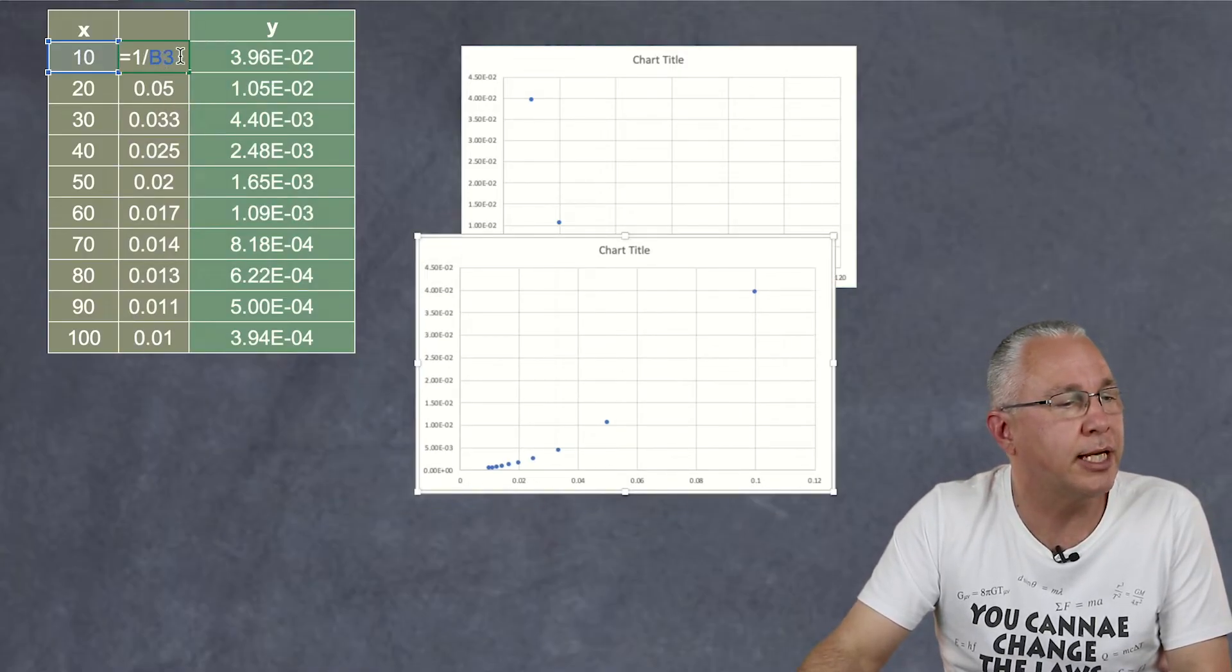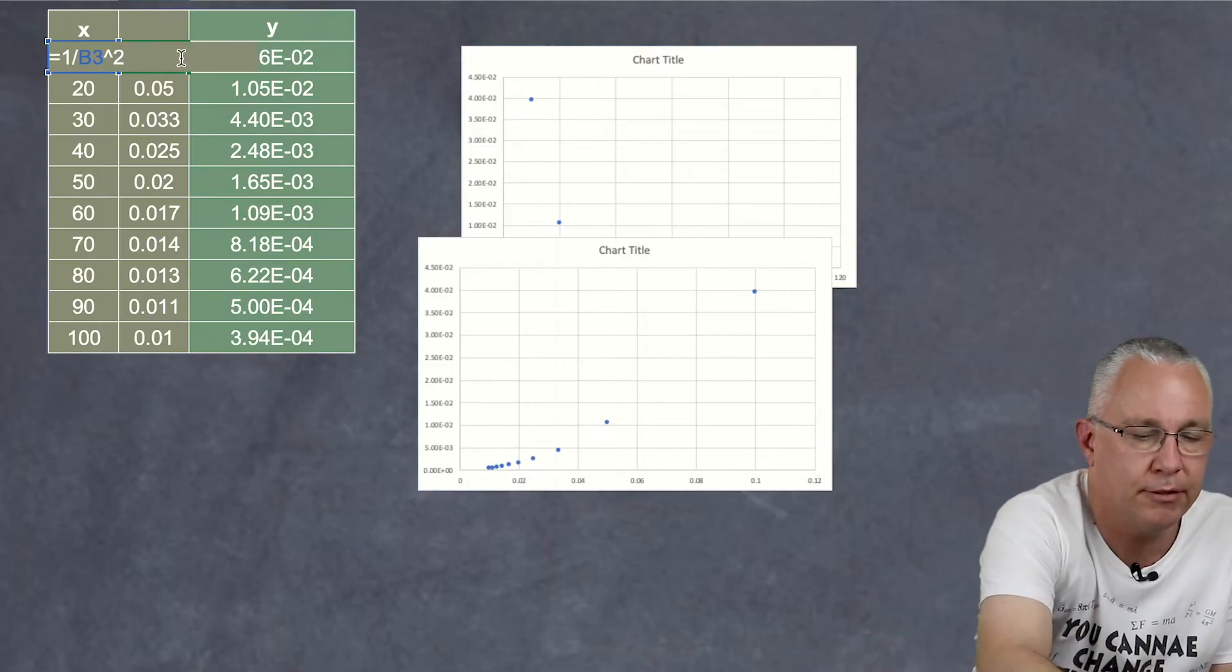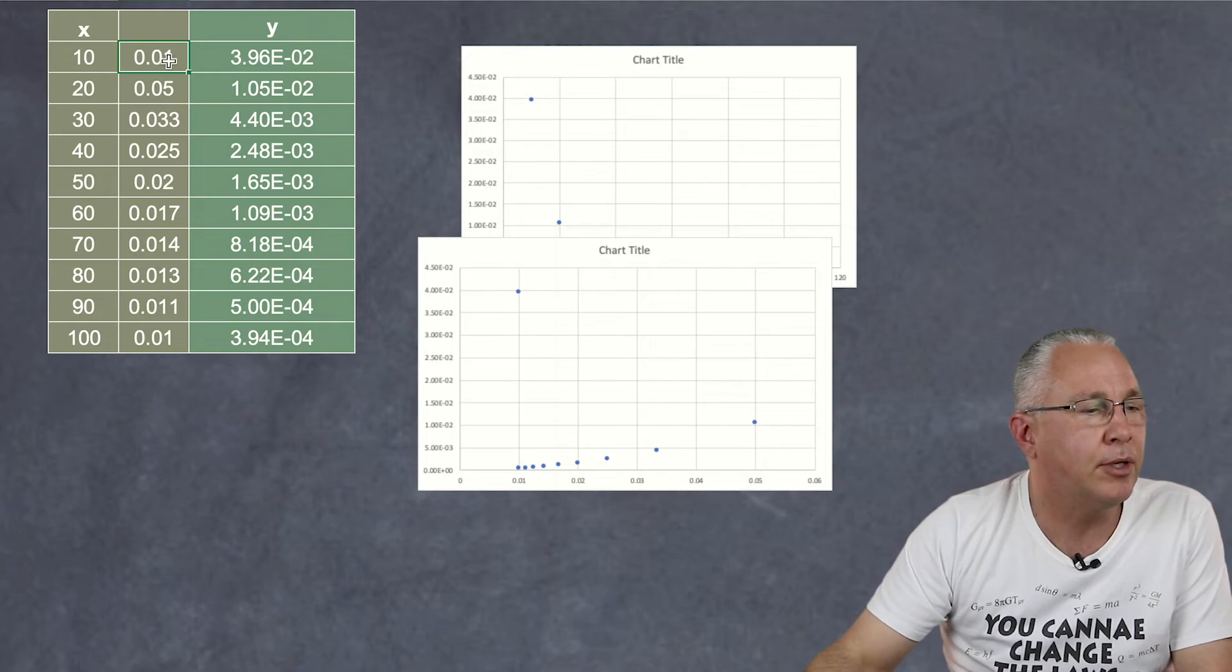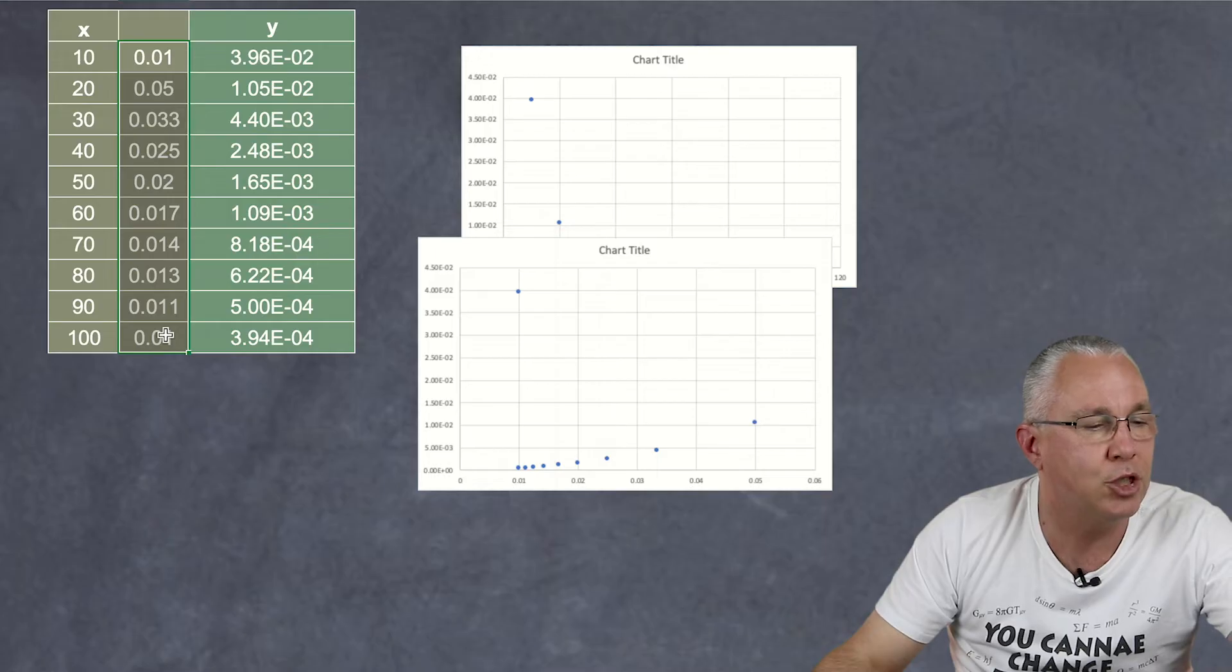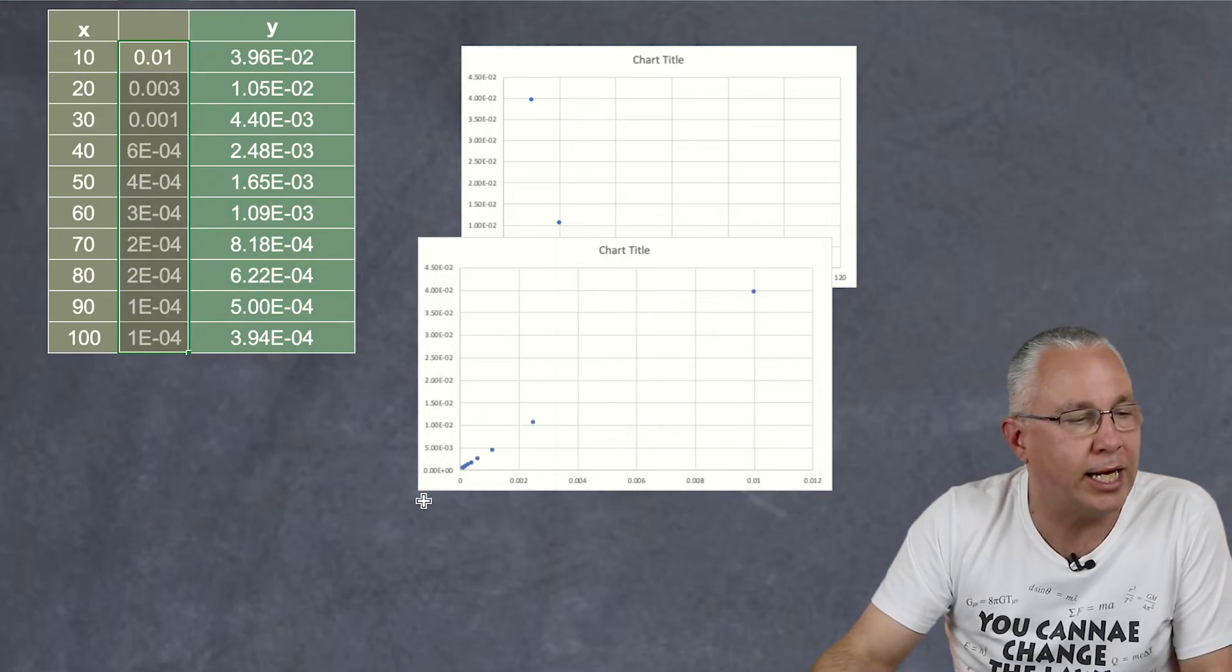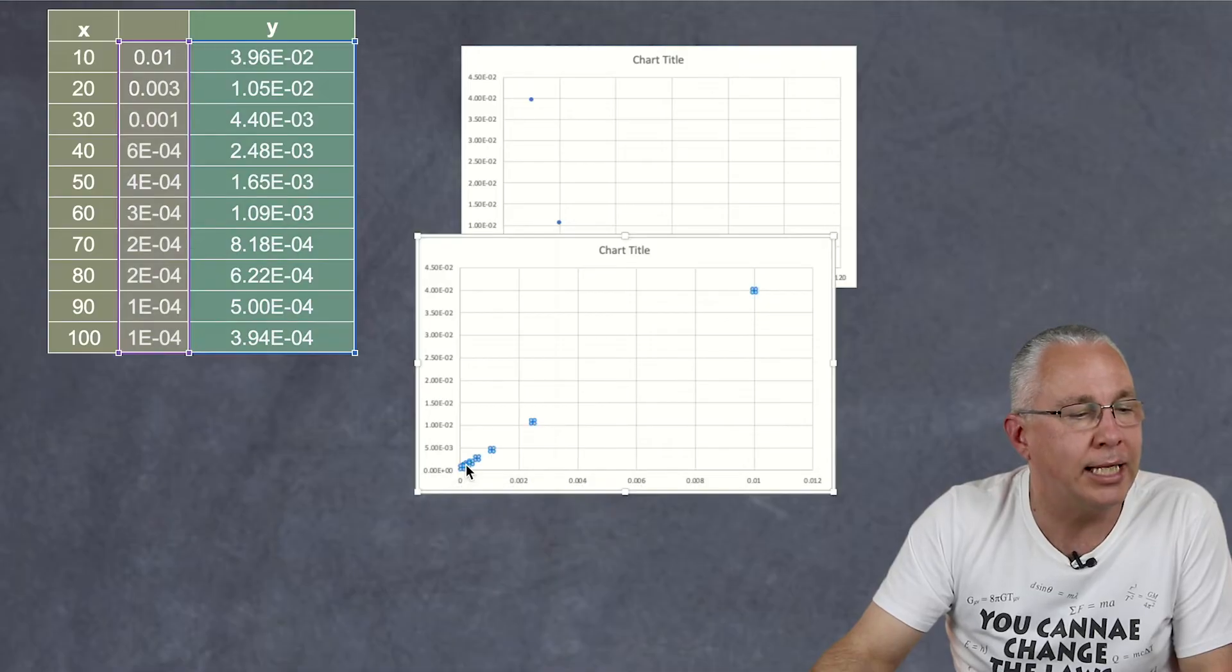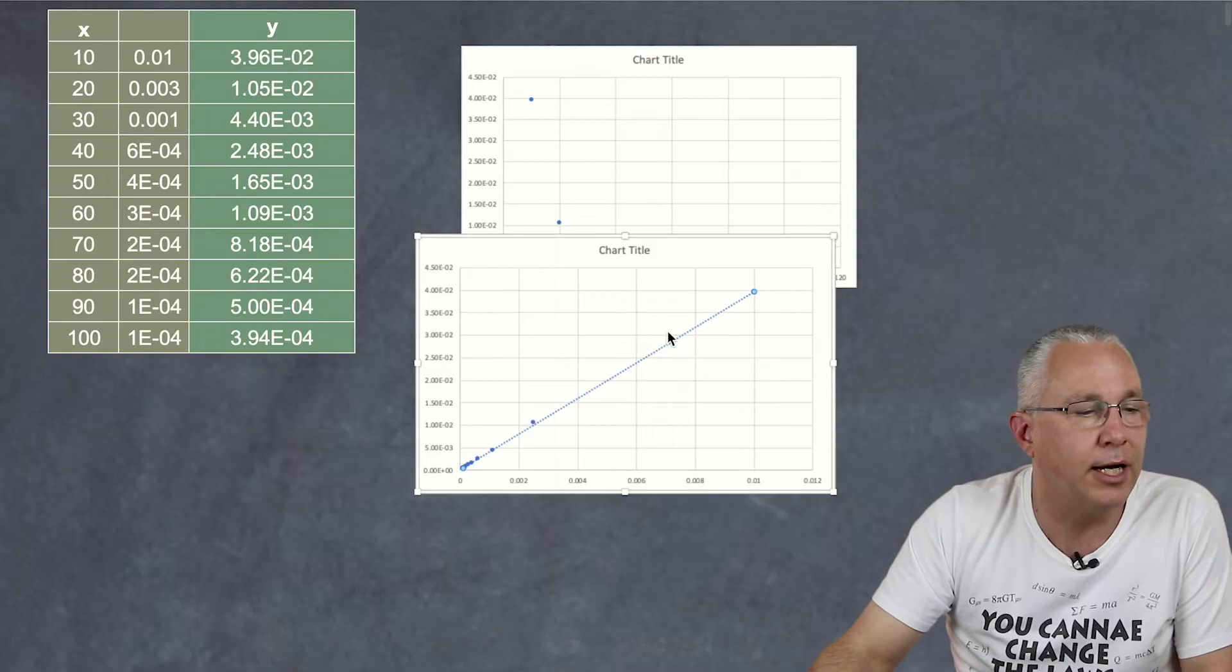So what I'm going to do again is I'm going to take this here and I'm going to put this up to a power of 2. I'm going to actually change the values over here and then what I'm going to do is I'm going to fill this down. So I'm actually replacing with the square relationship and when I fix that hey presto I've got a straight line now.